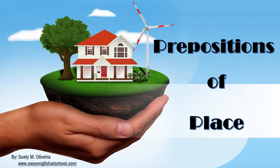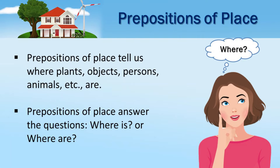Prepositions of place tell us where plants, objects, persons, animals, etc. are. Prepositions of place answer the questions: where is? Or where are?